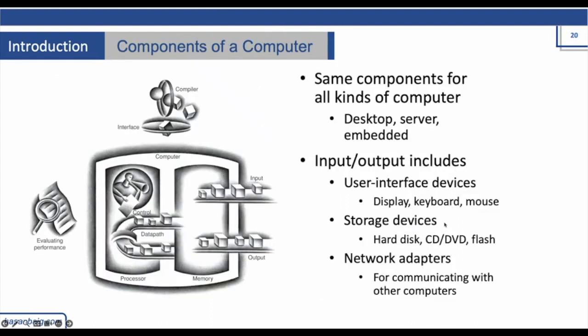If you talk about the components of a traditional computer, all computers have some basic components like input, output, processor, and the control unit. Whatever input is provided, the control unit informs the processor what it is supposed to be doing on the data path. Then the processor produces the output, which is stored in memory and then produced for the user.